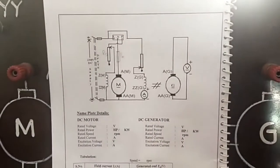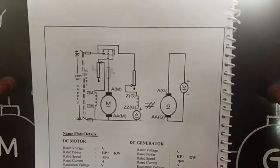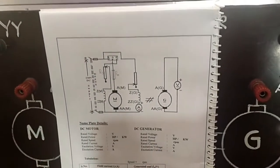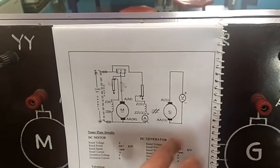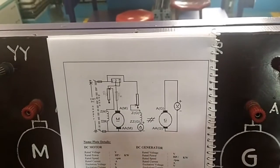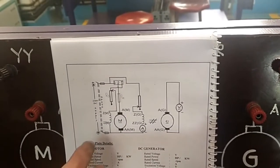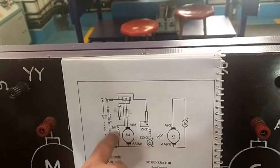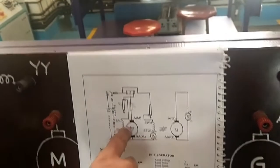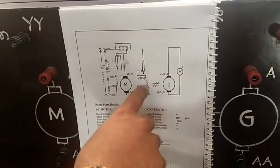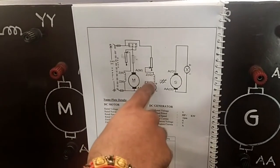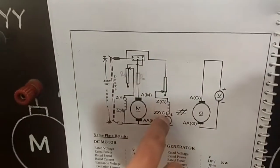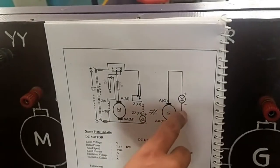Coming to the hardware part: this is a generator, so we need to give mechanical input using the motor. The generator is operated as a separately excited generator — the field is connected to a separate source, not directly across the armature. DC supply is given to the DC motor through its field circuit and armature circuit via resistors, running the DC motor at rated speed. The generator field rheostat starts at maximum resistance position.